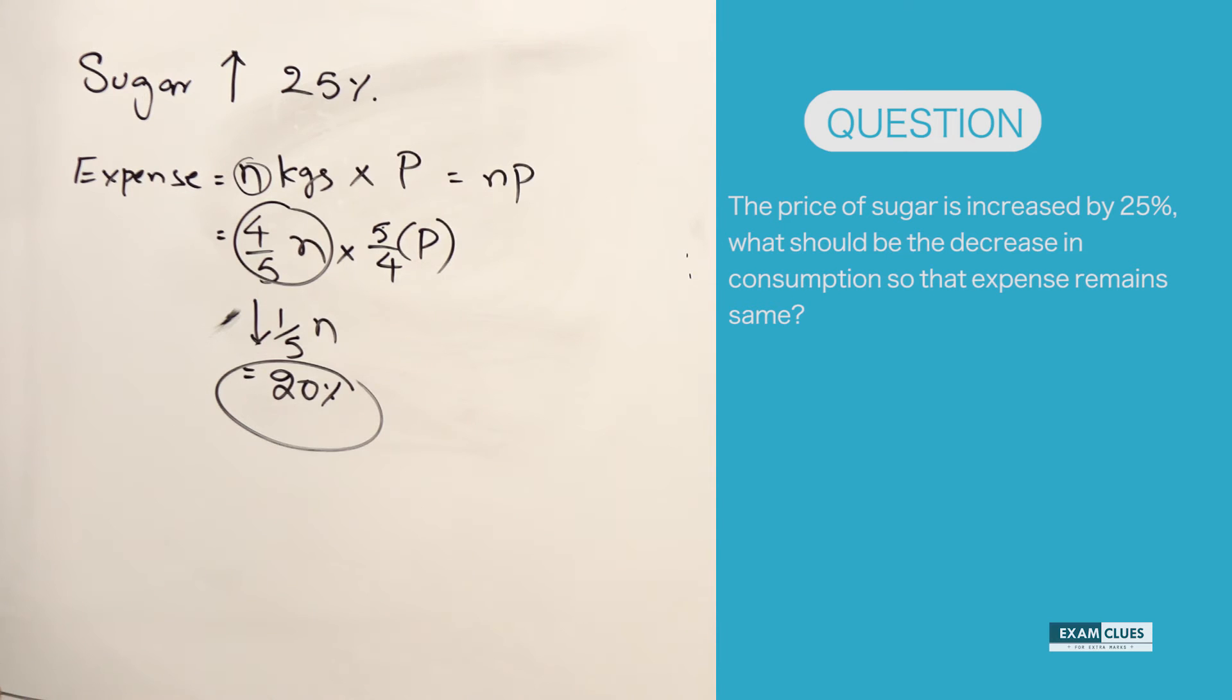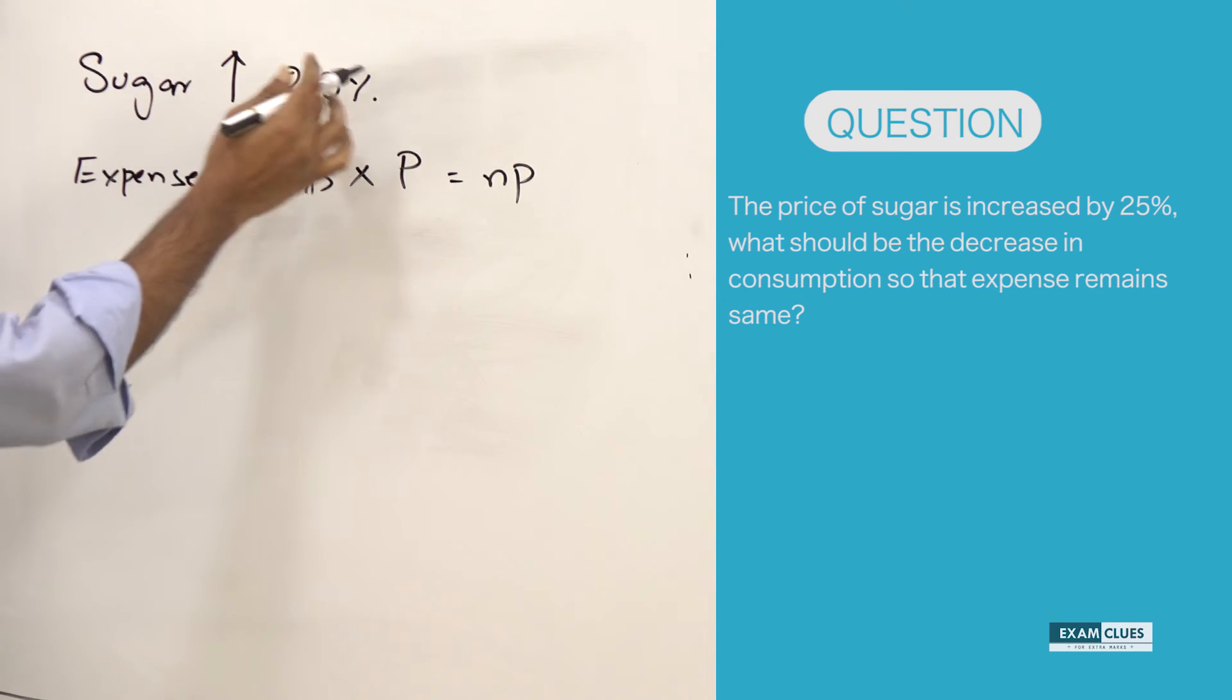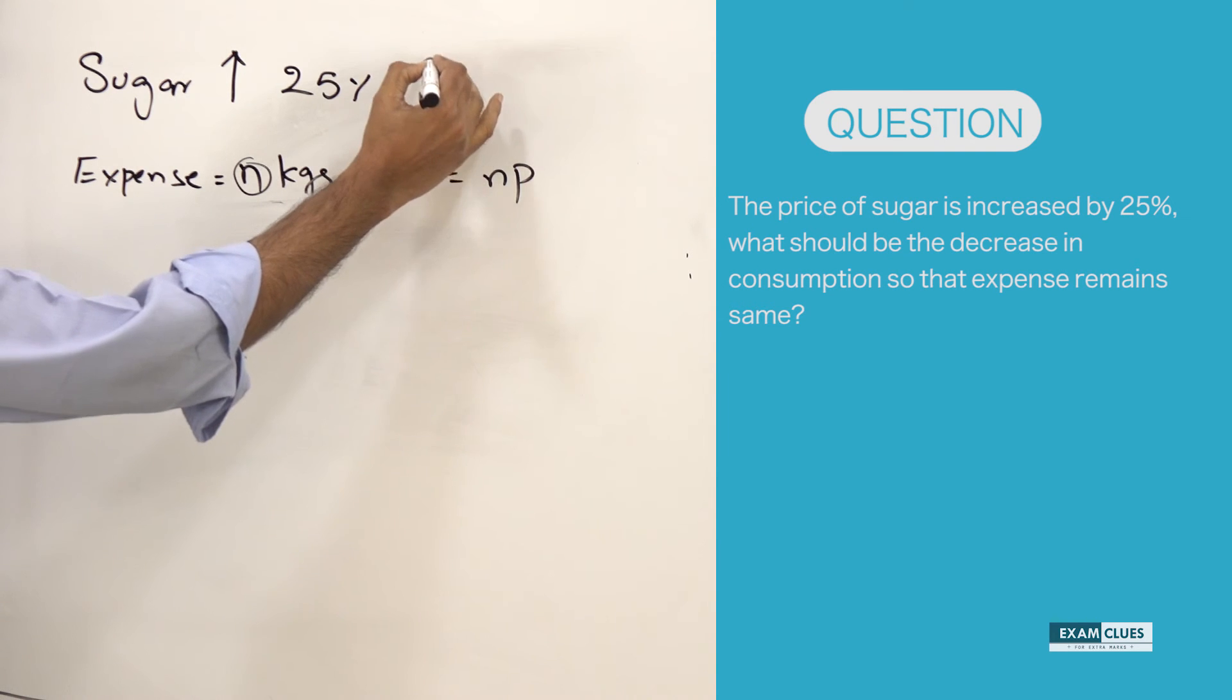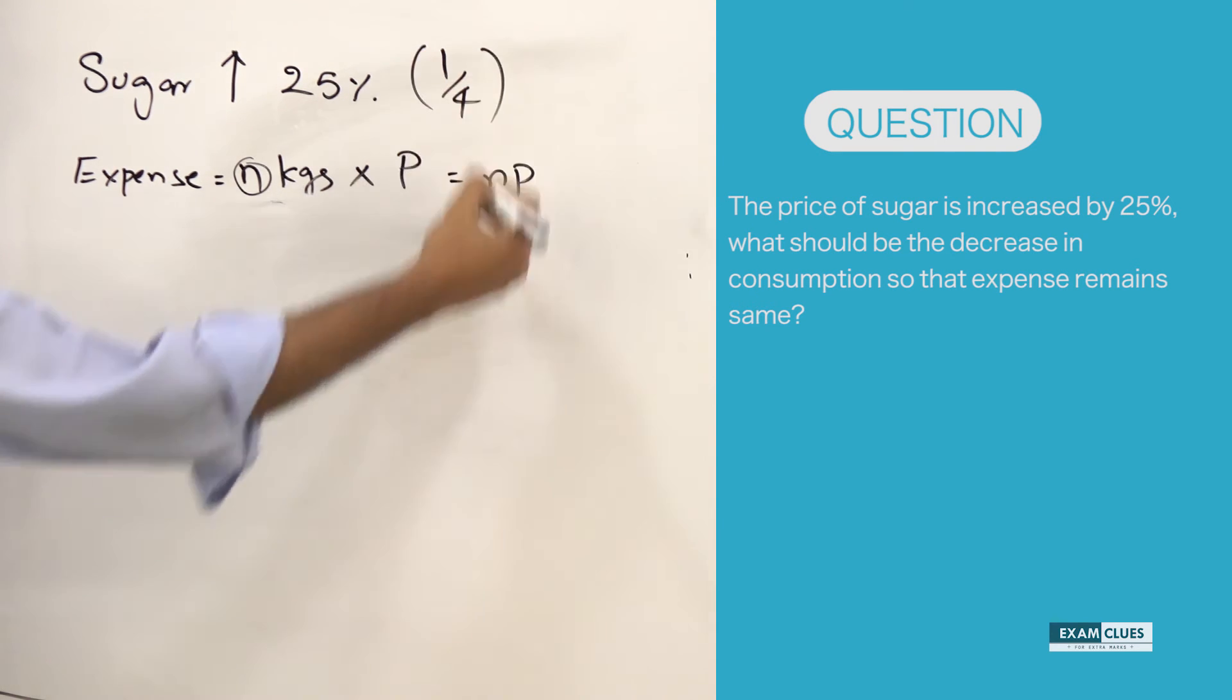This is one way of doing it, but I would like to give a trick here where you can solve this question without doing all this. The question is: sugar cost is increased by 25%, which is nothing but 1 by 4.